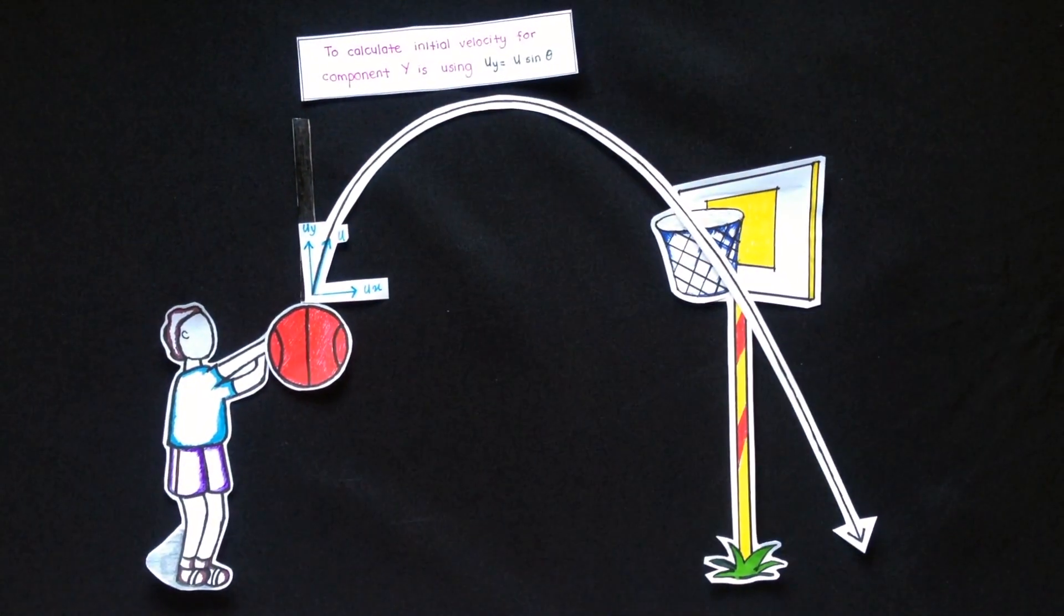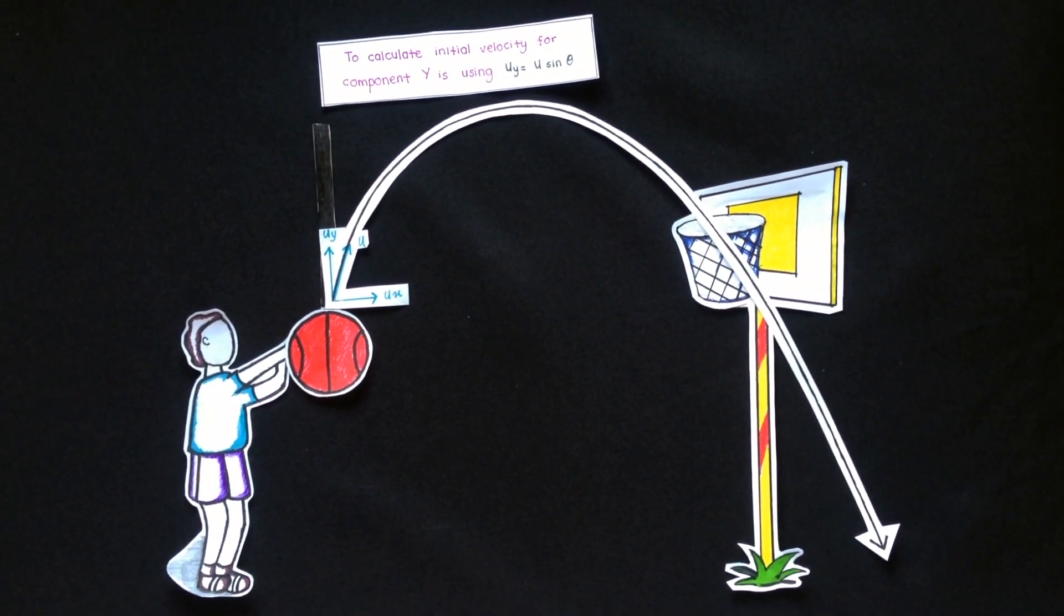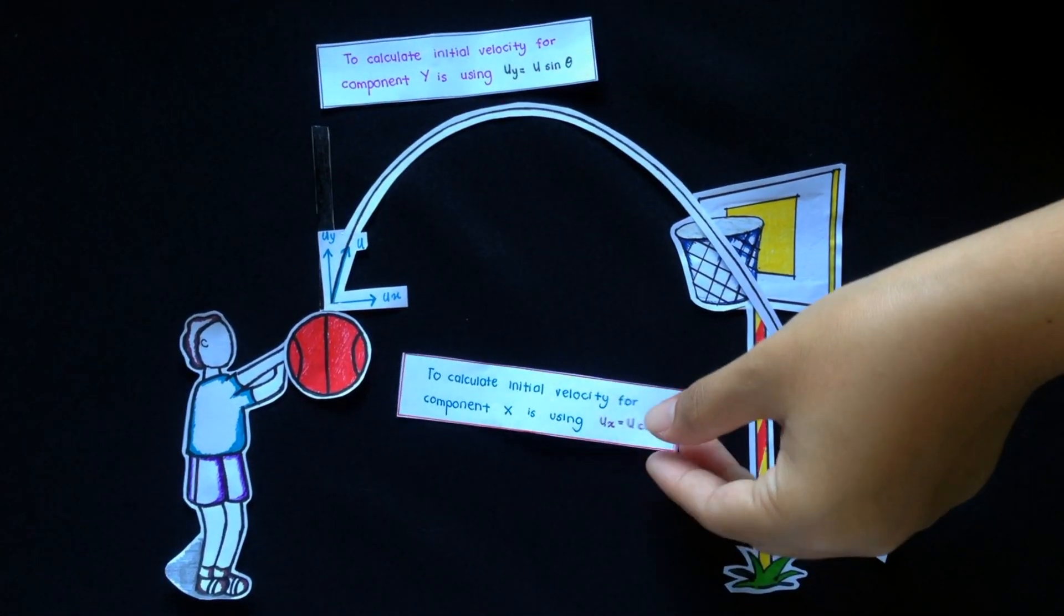Meanwhile, to calculate initial velocity for x component, we can use u x equal u cos theta.